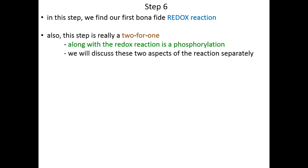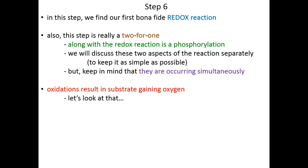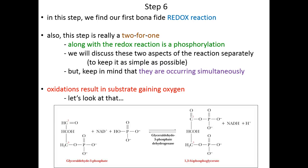Along with that redox, we also see a phosphorylation event. Even though these two aspects of the reaction are happening simultaneously — there's a redox and a phosphorylation — we will discuss these two separately to keep it as clear as possible. Do keep in mind, even though we'll talk about them separately, it's occurring all at once in this one reaction scheme. The oxidation we're going to see here results in substrate gaining an oxygen, and bisphospho means two different phosphate groups in two different locations.